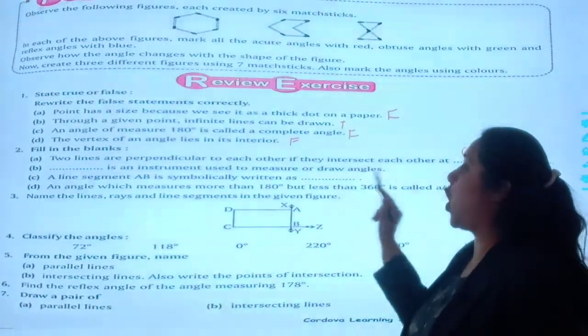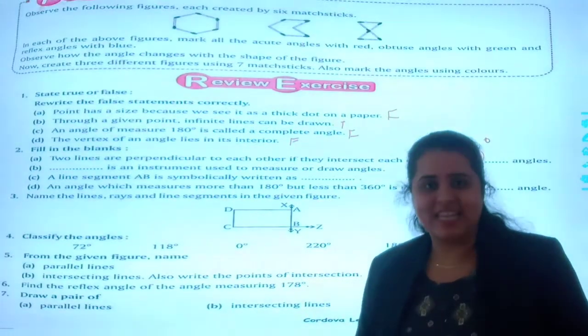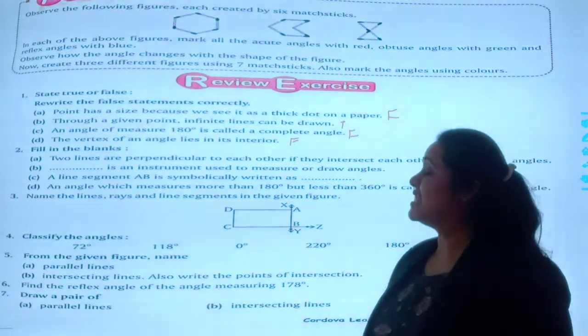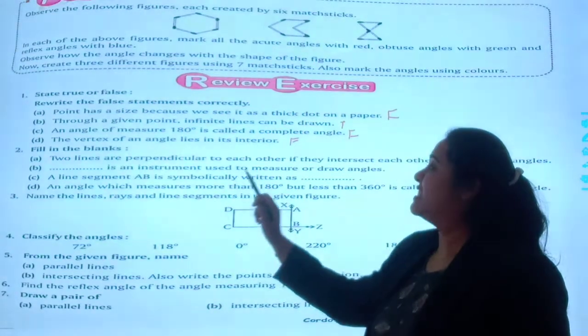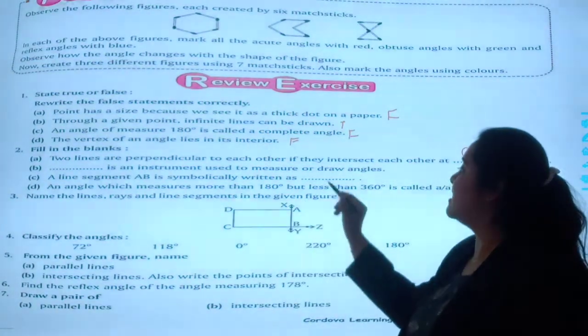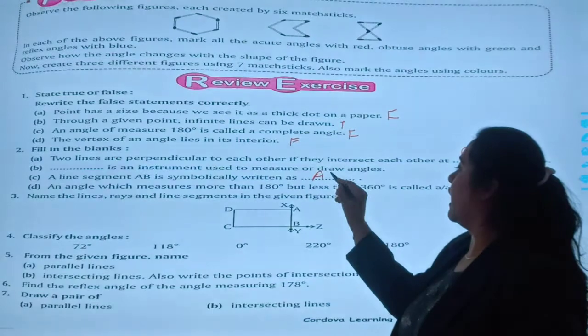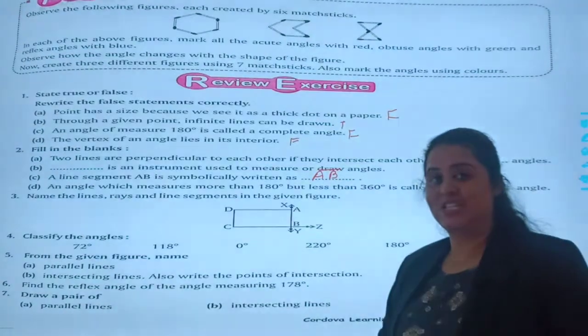B, dash is instrument used to measure or draw angles. Protractor. C, a line segment AB is symbolically written as AB this way. Understood?